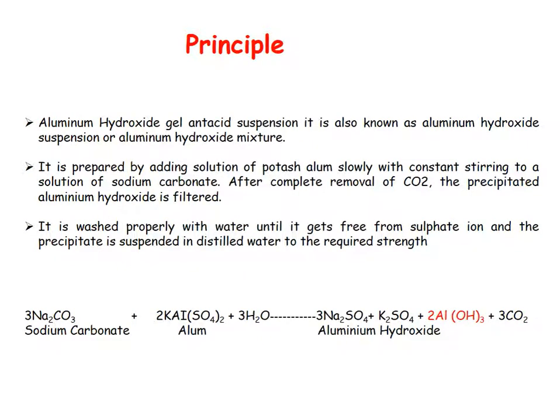Principle behind this experiment: Aluminium Hydroxide Gel is an antacid suspension known as aluminium hydroxide suspension or aluminium hydroxide mixture. It is prepared by adding a solution of sodium carbonate. After complete removal of carbon dioxide, the precipitated aluminium hydroxide is filtered, then washed with water until free from sulphate ions. The precipitate is then suspended in distilled water to the required strength. Sodium carbonate reacts with alum to yield aluminium hydroxide.